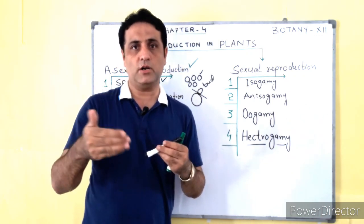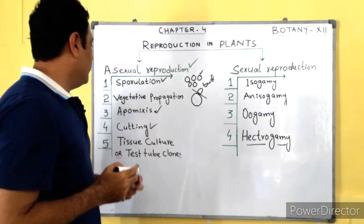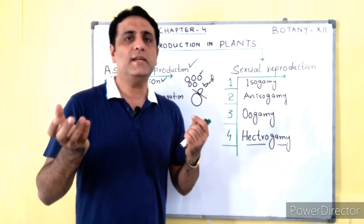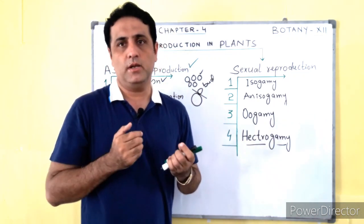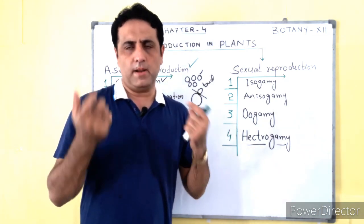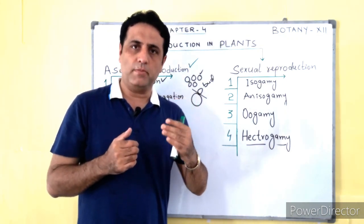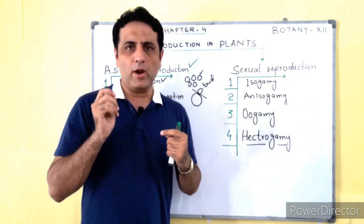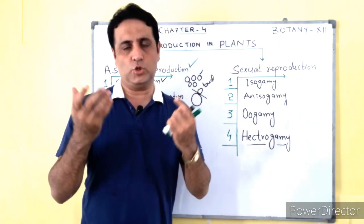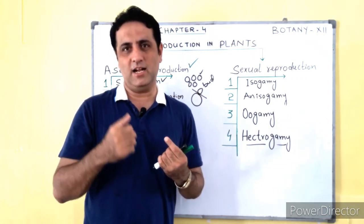The third type is apomixis. In apomixis, sexual reproduction does not take place; instead, an embryo is developed — meaning a seed is developed without the act of fertilization. In many plants like dandelion and other kinds of plants, this apomixis type of asexual reproduction takes place. A diploid cell present in the ovule gives rise to a seed, so without the act of fertilization an organism or embryo is produced. This process is called apomixis.